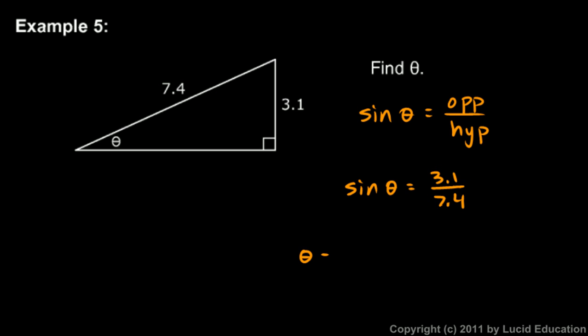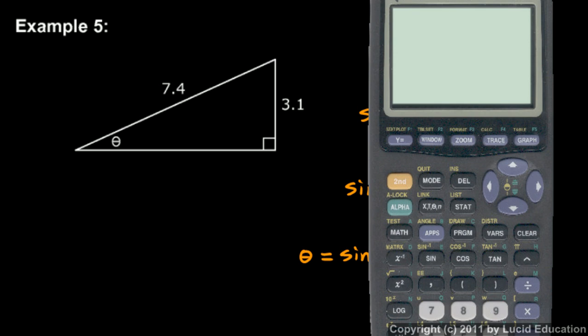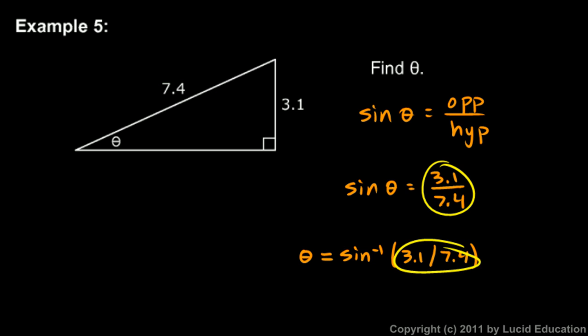So theta will be the inverse sine of 3.1 over 7.4. And I think it's best to do this in one step. You could do this calculation right here, 3.1 over 7.4, and get 0.4189. So I could right here just put in 0.4189, but that's not the best way to do it because this is a rounded number.